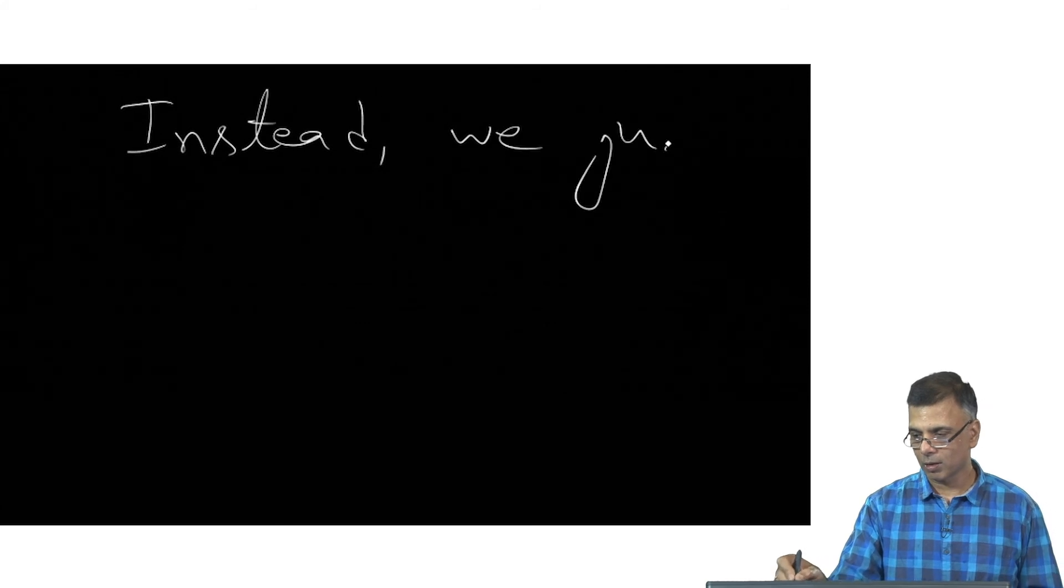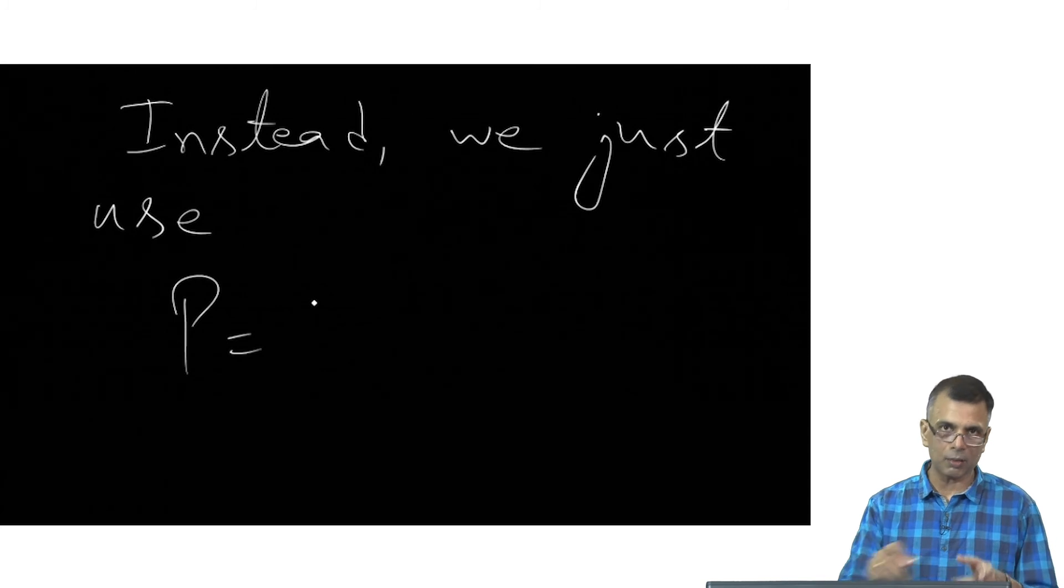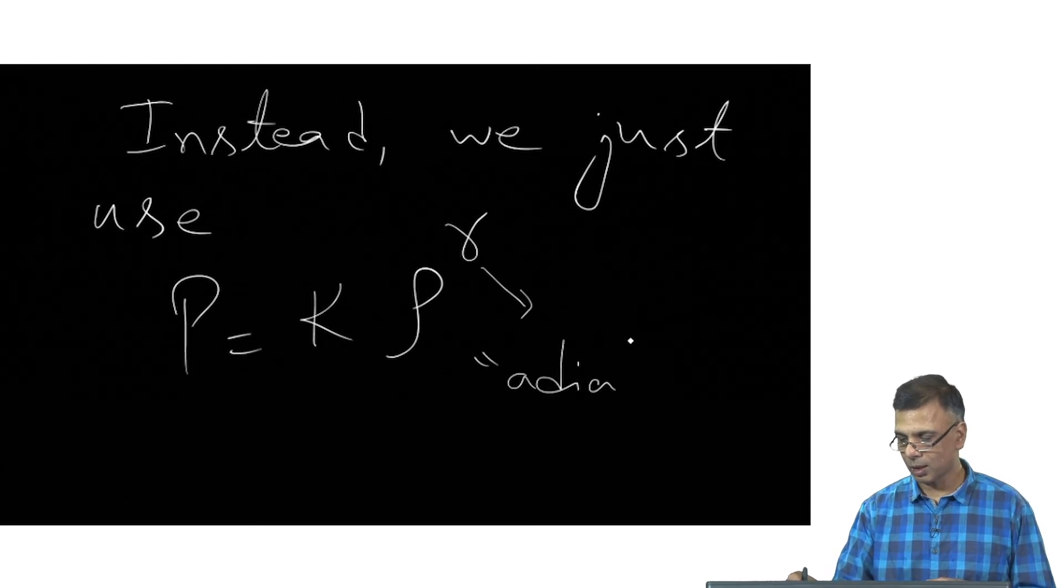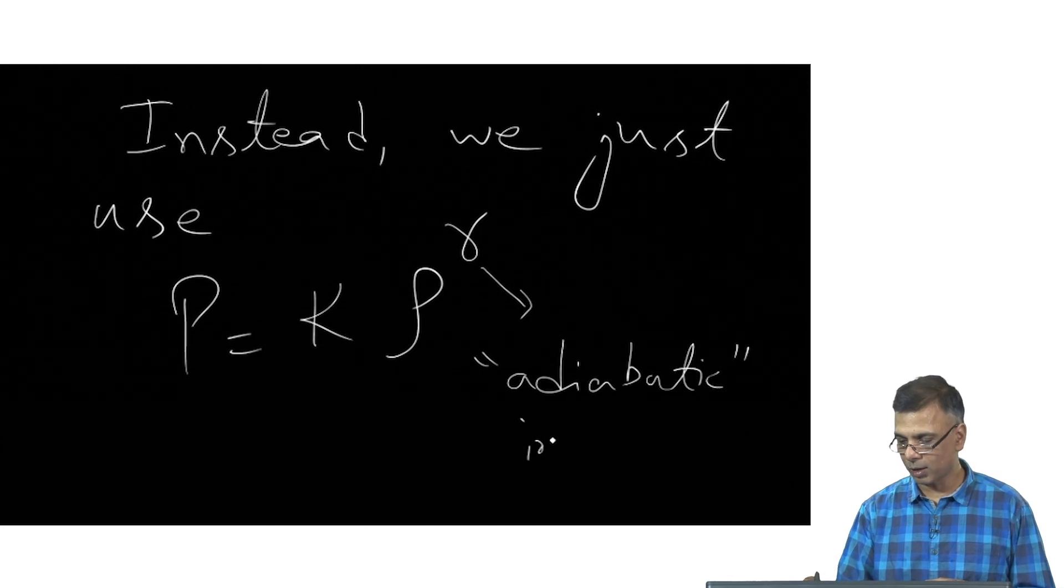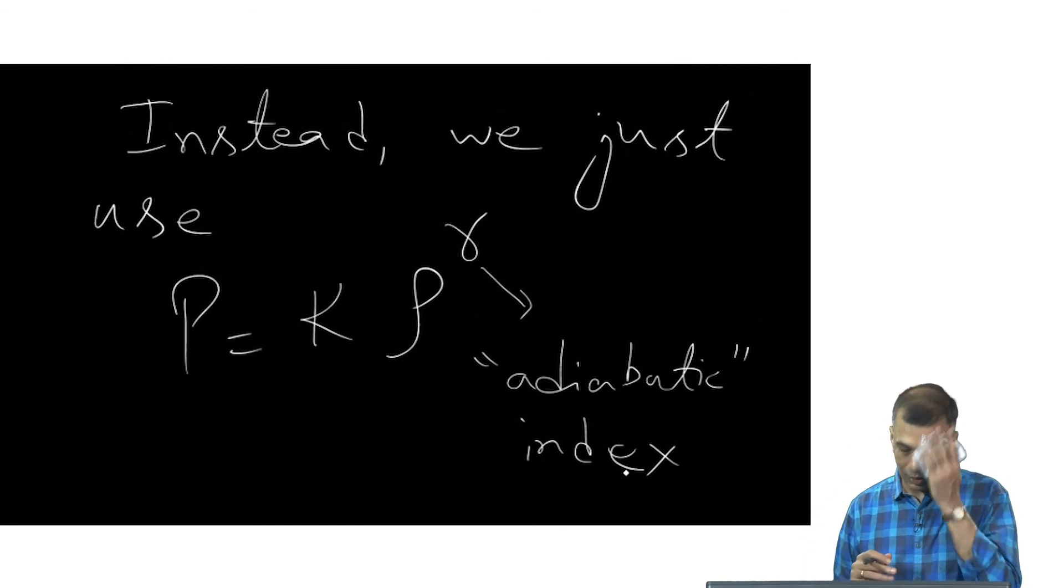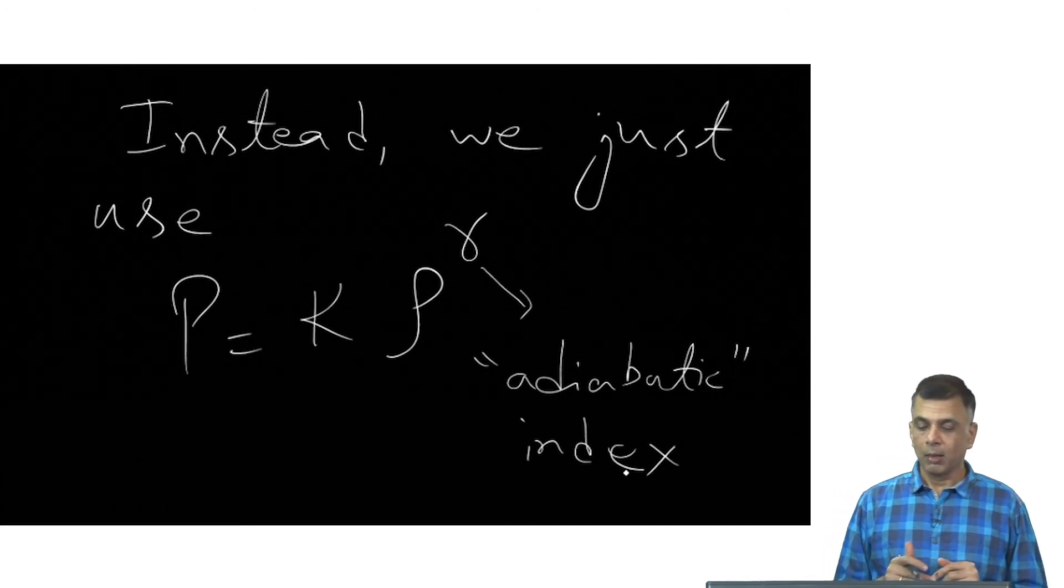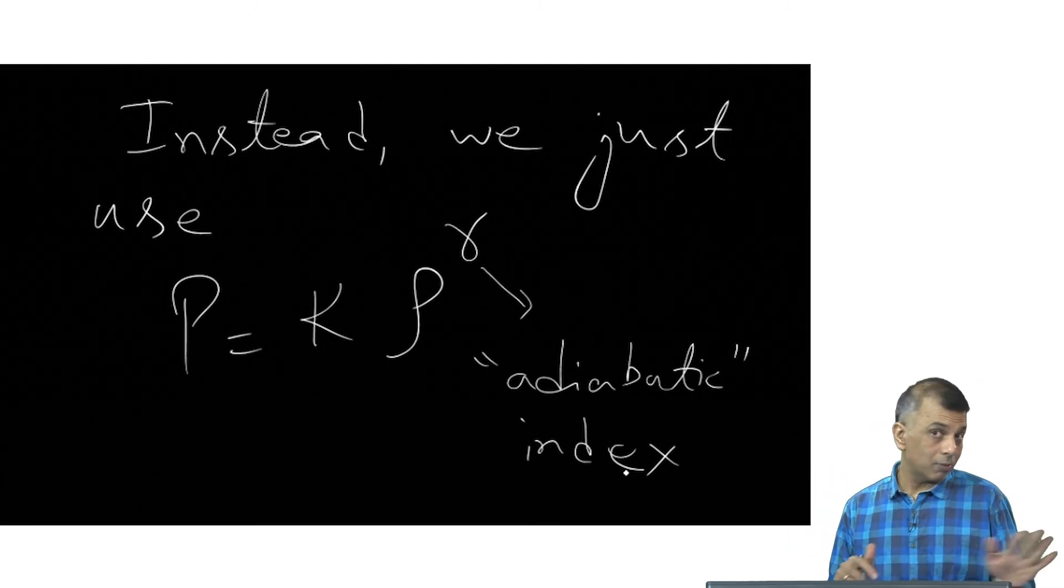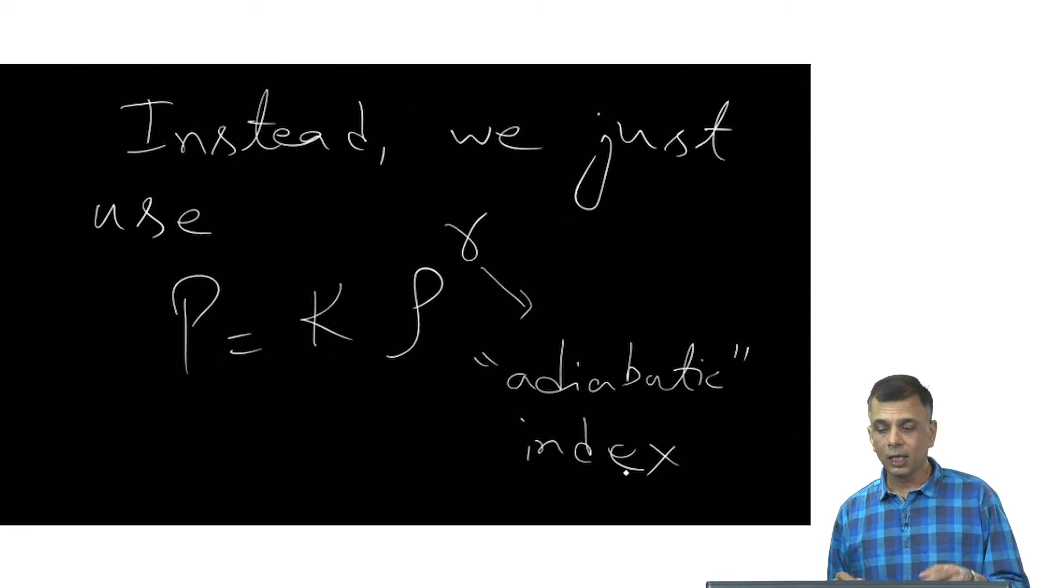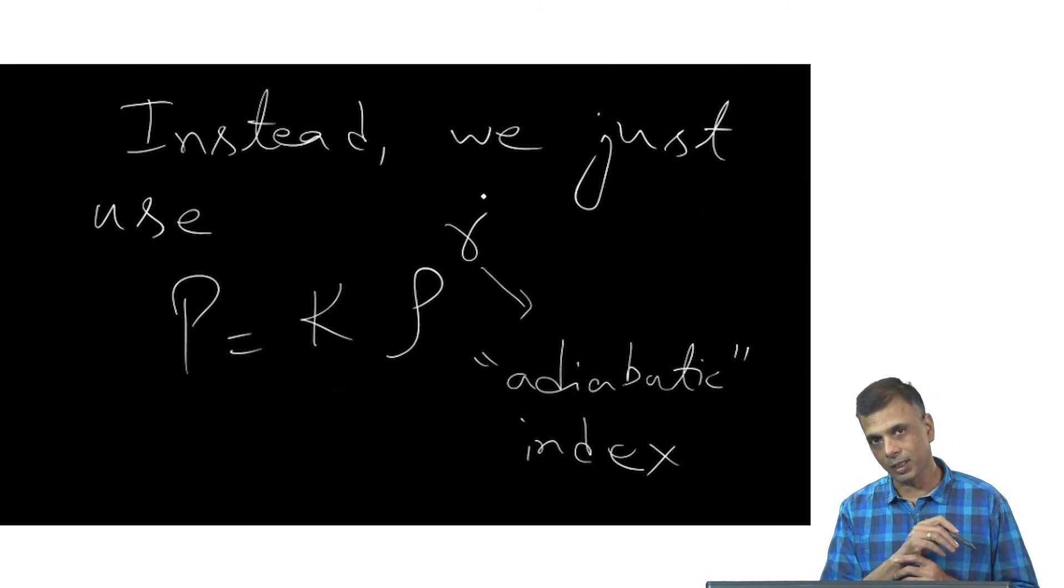we just use something like p equals k rho to the gamma, where this k is not the same as the other k that appeared in the conductivity. This would be an adiabatic index. And I deliberately write down the adiabatic in quotes to imply that this need not be always five thirds or always one as would be for an isothermal gas. It can be anything in between. But the point is, you can relate temperature and, sorry, never mind temperature, for the time being we're not introducing temperature, we can relate pressure and density like this, in which case you eliminate the actual need for an explicit energy equation, and everything, all the information about the evolution of energy is enclosed in this index right here.